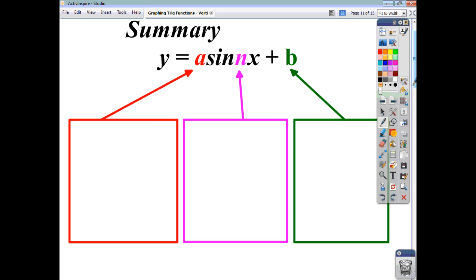Now, just to summarize then what we've looked at so far, this value A here is what determines your amplitude. n here is the number of cycles in 360 degrees. And finally, this B here is the vertical shift.